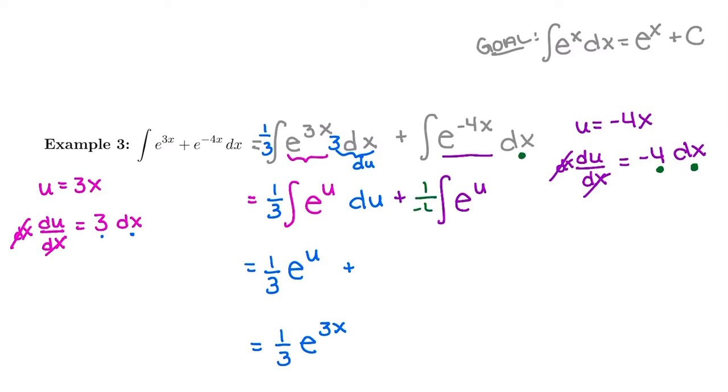So I have negative one-fourth of what I need to have my du. Or the other way of visualizing it is putting a negative 4 right in there so that we can see our du all together. But to balance out making it negative 4 times too big, we're going to put a 1 over negative 4 outside. Either way, we get the same thing. Negative one-fourth e to the u du.